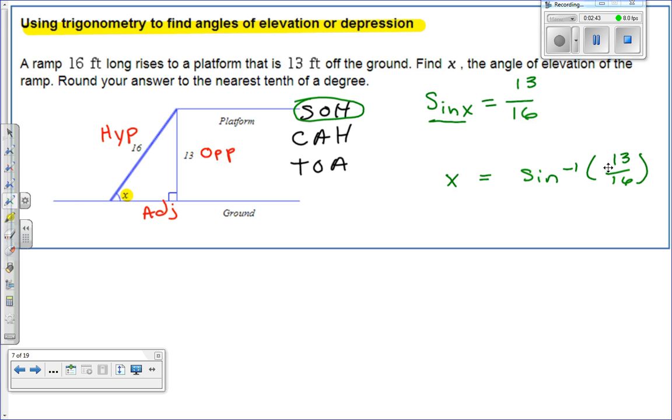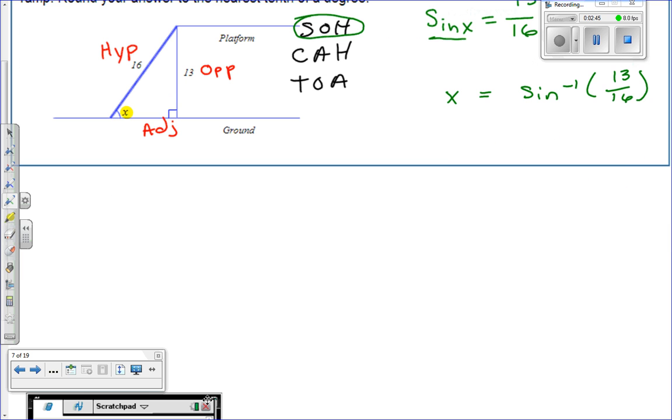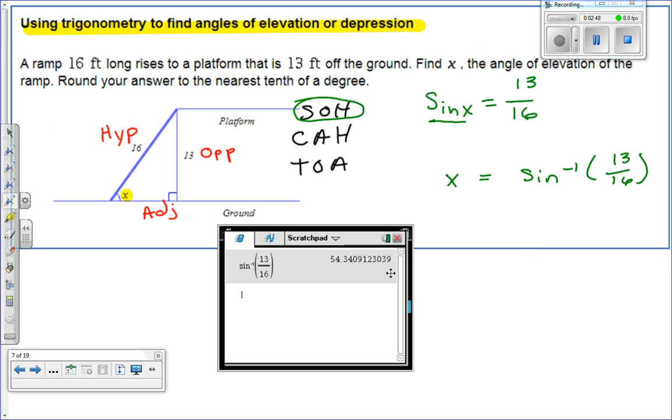We're going to type it right in our calculator. That's, again, under that trig value. You'll see that we get this value right here. So 54.34, and we're rounding to the nearest tenth. This is tenth right here.